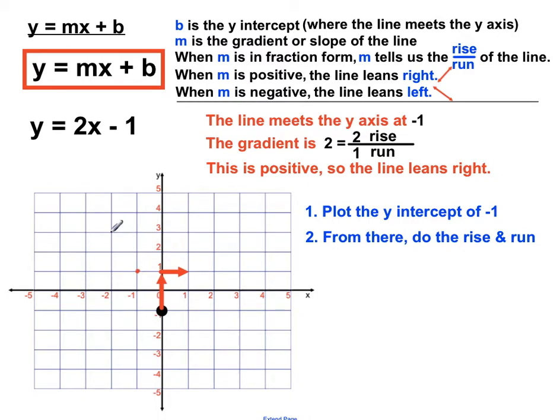But that would mean that the line would eventually lean to the left. And I know that this line leans to the right because that number in front of the x is positive. So I've got to make sure that when I do the rise and run that I'm creating a line that's leaning to the correct way according to the number in front of the x there.